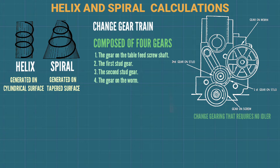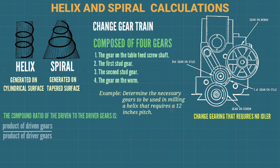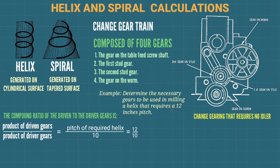Illustration for compound gearing that requires no idler. Example: determine the necessary gears to be used in milling a helix that requires a 12-inch pitch. The compound ratio of driving to driven gears equals the product of driving gears over the product of driven gears, which equals pitch of required helix divided by 10, so 12 over 10.